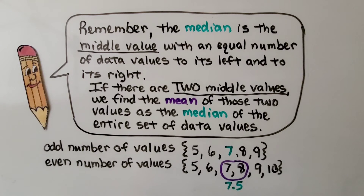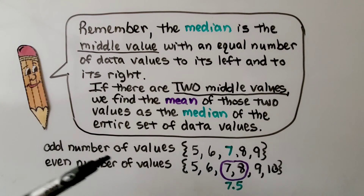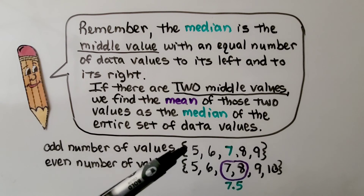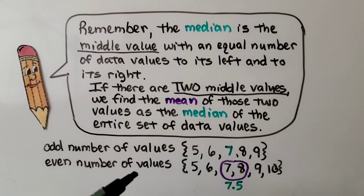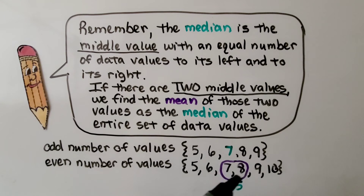Remember, the median is the middle value with an equal number of data values to its left and to its right. If there are two middle values, we find the mean — the average of those two values — as the median. If there's an odd number of values, it's easy to find the median — it's the middle number. When there's an even number of values, we take the two center ones and find the mean, the average, to find the median.